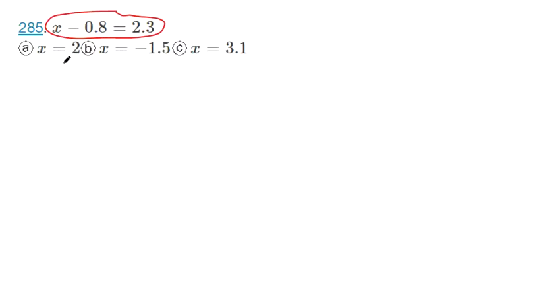So if x equals 2 is a solution, I should be able to plug 2 in place of x, and I should get out 2.3 when I simplify. But if you do 2 minus 0.8 in your calculator, you get 1.2. So that doesn't equal 2.3. That means this is not a solution.